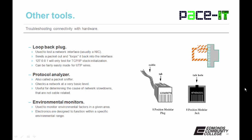Then there's the protocol analyzer, also called a packet sniffer. They check a network at a very basic level and are useful for determining the cause of network slowdowns that are not cable related. Finally, we have environmental monitors. These are used to monitor environmental factors in a given location. Electronics are designed to function within a specific environmental range, and if you fall outside of that range, you may end up with a connectivity problem.